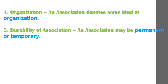Number five: durability of association. An association may be permanent or temporary. There are some long-standing associations like the state, family, and religious associations. Some associations may be temporary in nature — for example, associations established to felicitate great writers, scientists, or religious leaders, and associations created for performing some social, religious, or other ceremony on a grand scale.